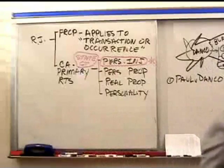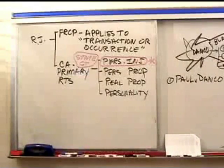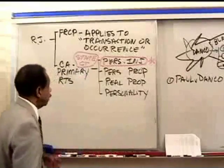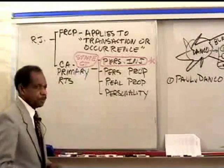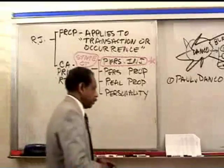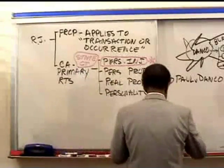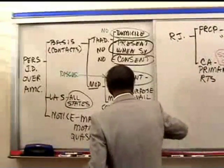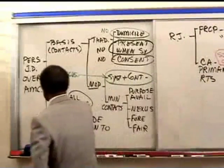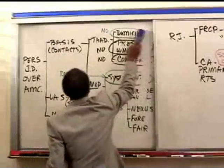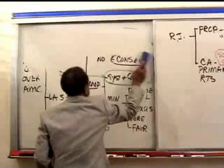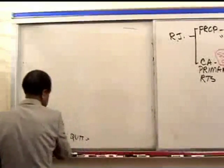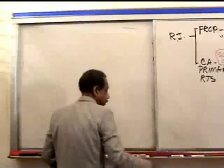Picking up where we left off, we left off having understood what Res Judicata is about, and the place we have to go now is to Collateral Estoppel, the other important issue in this area. Let us talk about Collateral Estoppel.